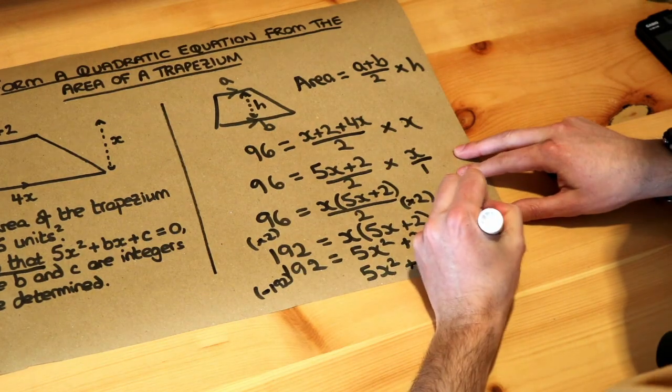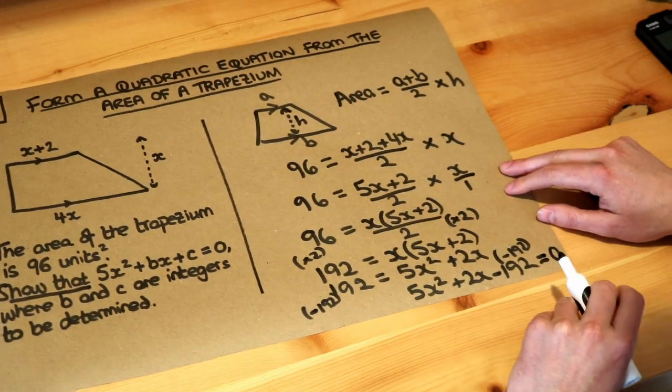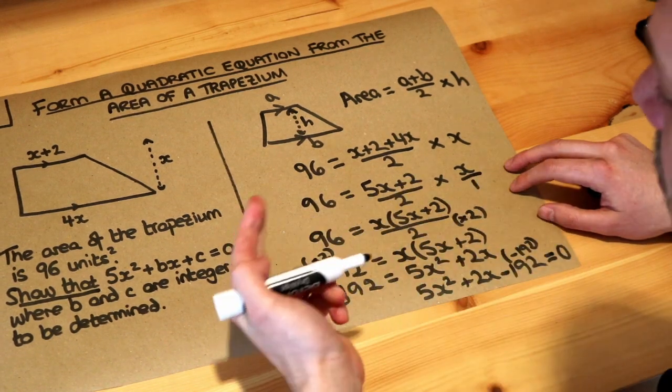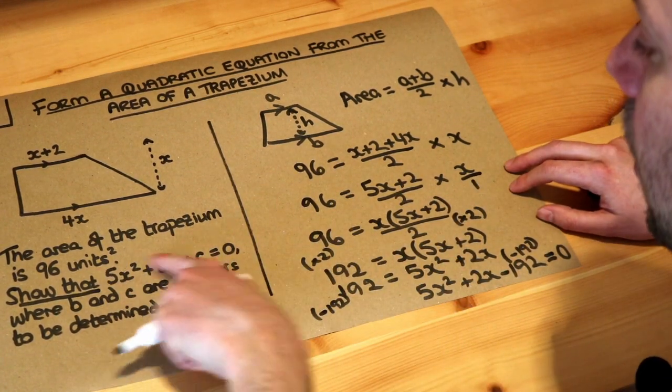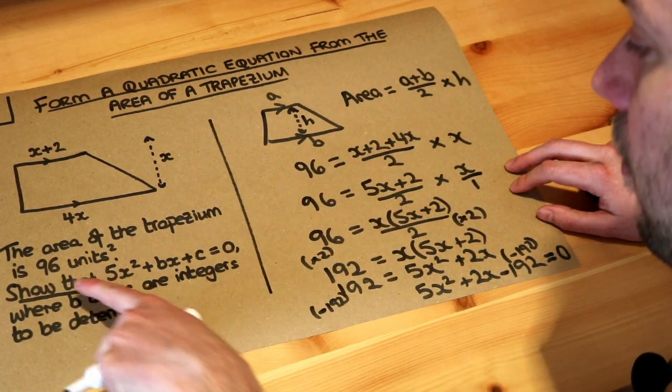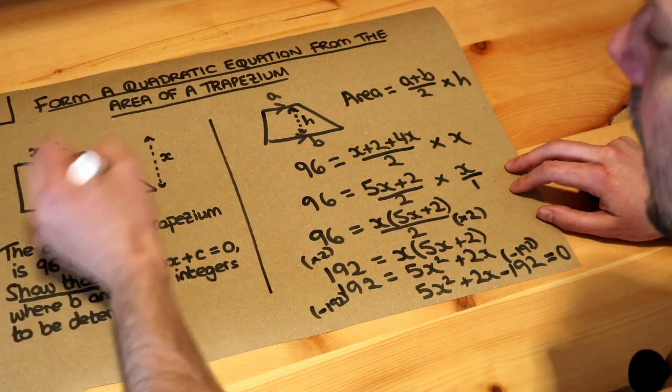But just for consistency with here, I'm going to put the equals 0 over here, and we're done. Just a reminder: we could solve this equation, but the question is not requiring us to do that. It just wants us to show how we could get to an equation in this form using the information provided—the area of 96 and these sides there.